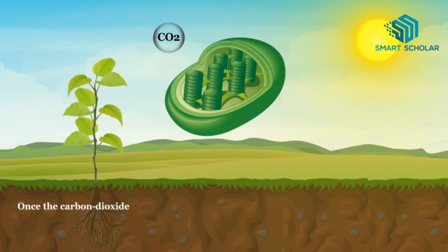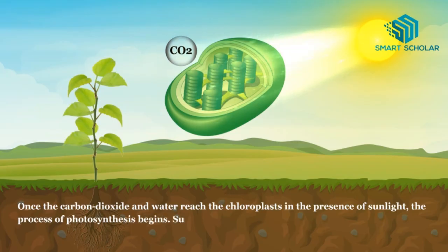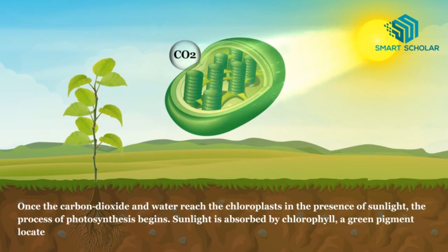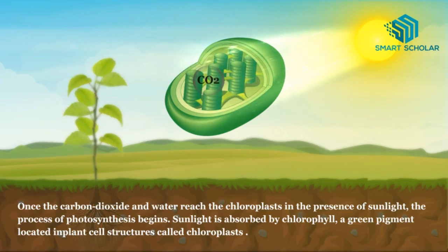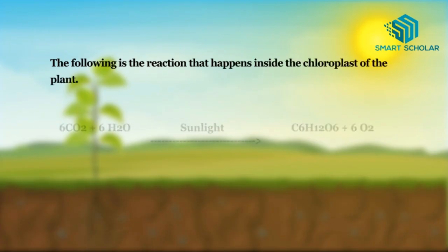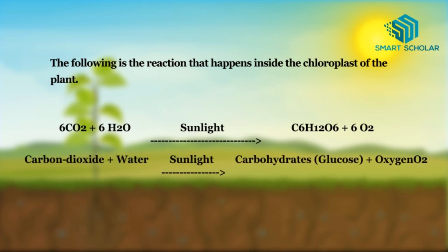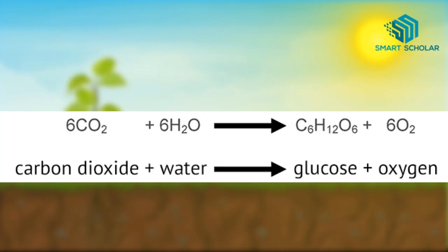Once the carbon dioxide and water reach the chloroplasts, in the presence of sunlight, the process of Photosynthesis begins. Sunlight is absorbed by chlorophyll, a green pigment located in the plant cell structure called chloroplasts. The following is the reaction that happens inside the chloroplasts of the plant: carbon dioxide and water in the presence of sunlight give carbohydrates and oxygen. The products of Photosynthesis are glucose and oxygen.